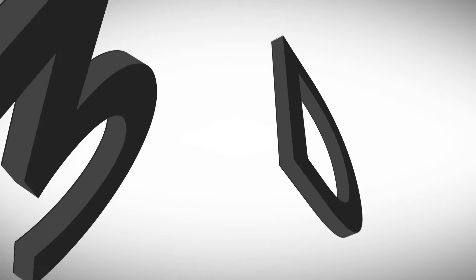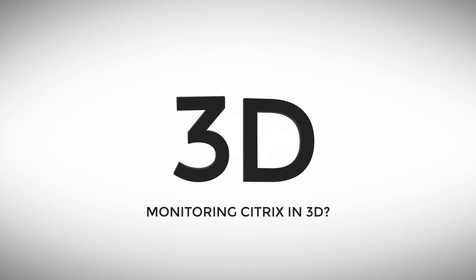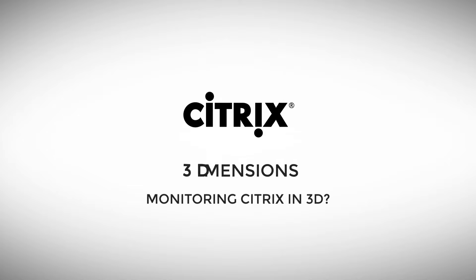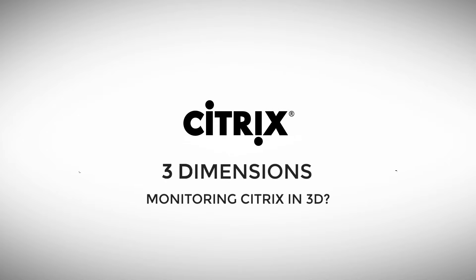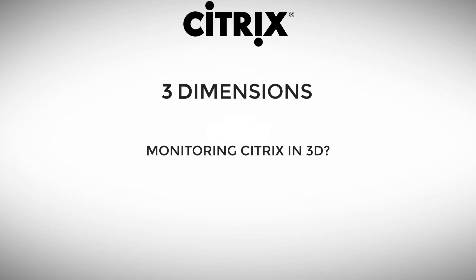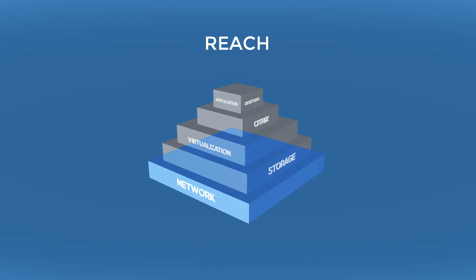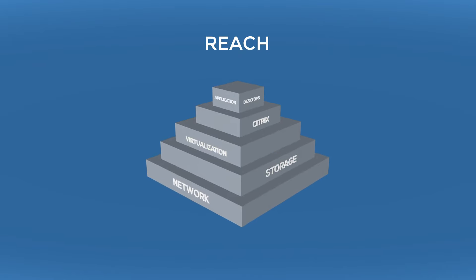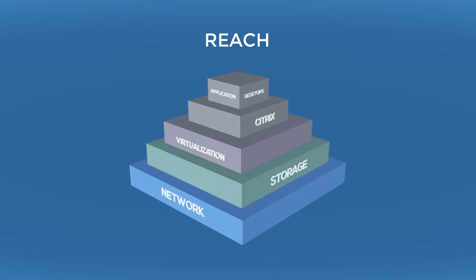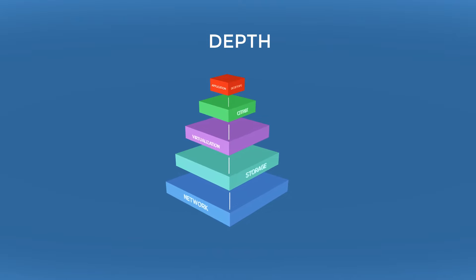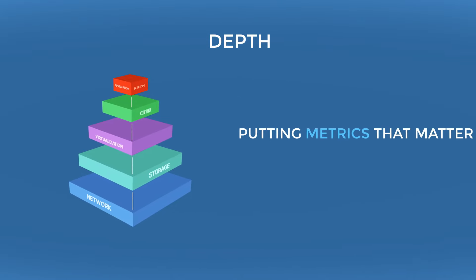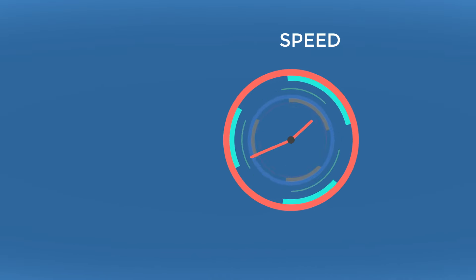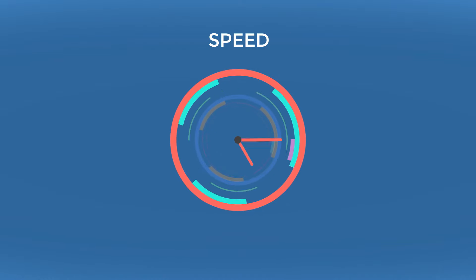Are you monitoring your Citrix applications in 3D? Because in order to manage Citrix performance effectively, you need three dimensions: reach across every tier — network, storage, virtualization, Citrix, Windows and more; depth of coverage throughout each stack, putting metrics that matter at your fingertips; and speed to resolution — minutes instead of hours.